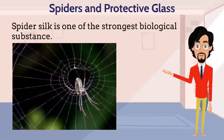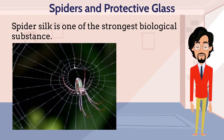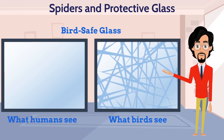Did you know spider silk is one of the strongest biological substances? There is something even more special about spider silk. Several birds die after crashing into glass windows and doors because it is nearly impossible for birds to identify transparent surfaces. So the engineers took inspiration from spider silk to create bird-safe glass. As spider silk reflects ultraviolet rays, birds can identify these reflective strands and avoid them, saving a lot of birds.